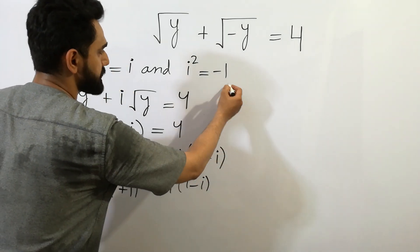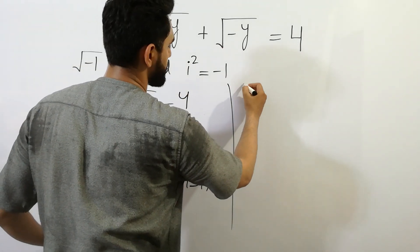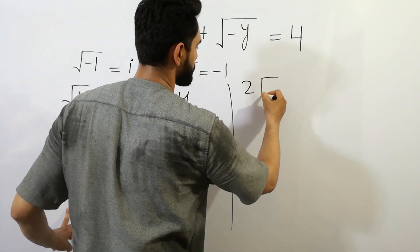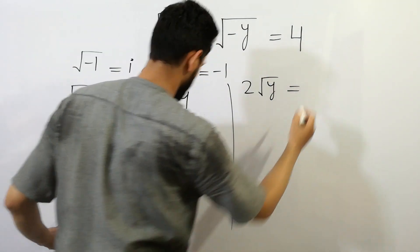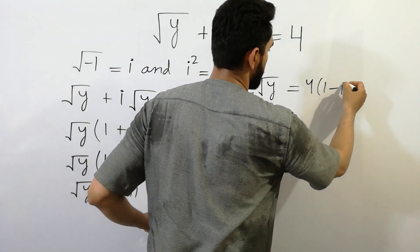In the next step, 1 plus 1 is equal to 2, we can write here 2 square root of y is equal to 4 bracket 1 minus i.